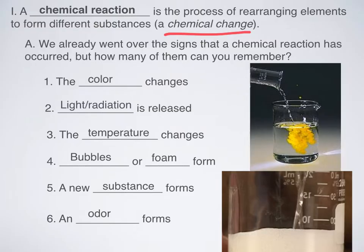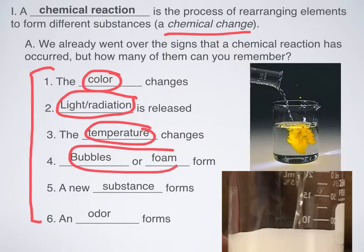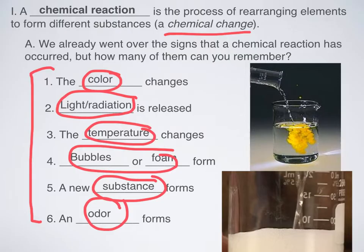We already went over the signs of chemical reactions, but how many of these can you remember? We had these six: color changes, light and radiation being released, temperature changes, bubbling or foaming, new substances forming, and odors. Remember, these do not necessarily mean that a chemical change has occurred, but they can point you in that direction. If you have one or more of these, it could be a sign that a chemical reaction has occurred.